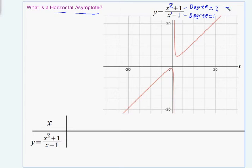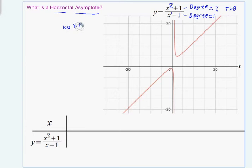I abbreviate this as t bigger than b for my students, where t represents the degree of the polynomial on top, the numerator, and b is the degree of the polynomial on the bottom. It turns out whenever this is the case, you do not get a horizontal asymptote. Sometimes you get an asymptote, but it's never horizontal. So the answer would just be there's no horizontal asymptote, but this video intends to explore why.